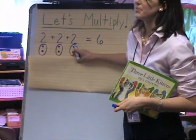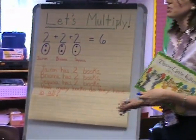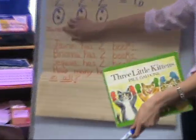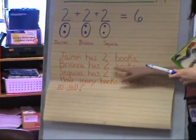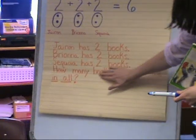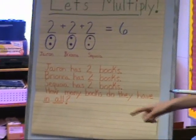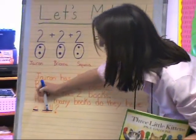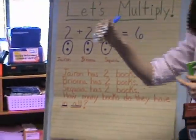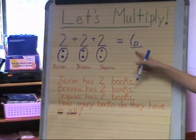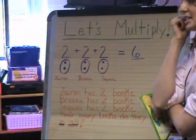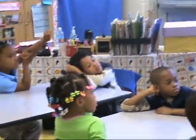I'm going to show you another word problem using Jiron's name, Brianna's name, and Sequoia's name. Jiron has two books, Brianna has two books, and Sequoia has two books. How many books do they have in all? When you see 'in all,' what symbol do we usually use? You add and count up when you see 'in all.' That's exactly right, Elijah — high five. And we see the answer six. This word problem can be done with multiplication.